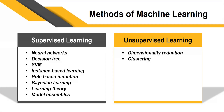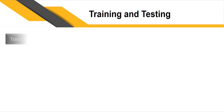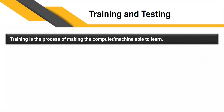Methods of learning include both supervised and unsupervised techniques. Supervised learning methods include neural networks, decision trees, SVM, instance-based learning, Bayesian learning, rule-based induction, inductive learning theory, and model ensembles. Unsupervised learning techniques include clustering, dimensionality reduction, and many more. After selecting the technique, the task is to train the system so it can learn on its own.